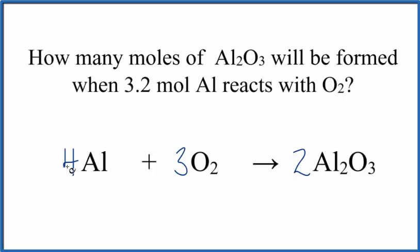These coefficients in our balanced equation, we think of those as a ratio: 4 to 3 to 2. So for every four atoms of aluminum, we'd have three molecules of oxygen, and we'd produce two formula units of aluminum oxide.